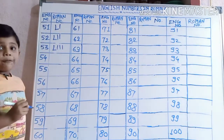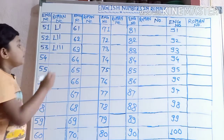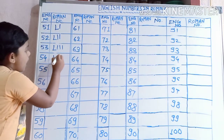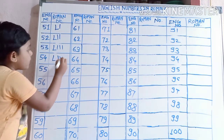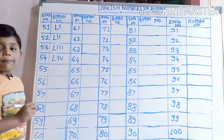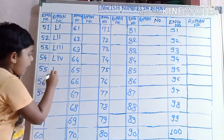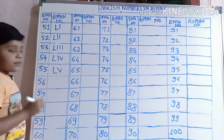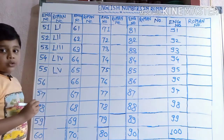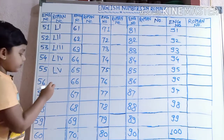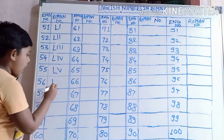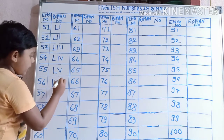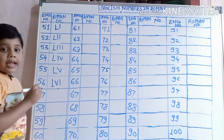54 ko: L, I, V. 55 ko: L, V. 56 ko: L, V, I, I.